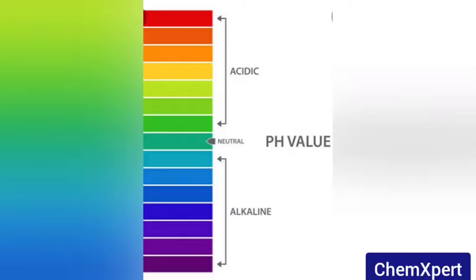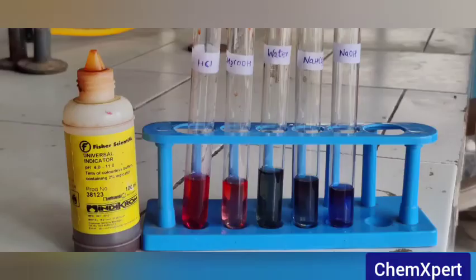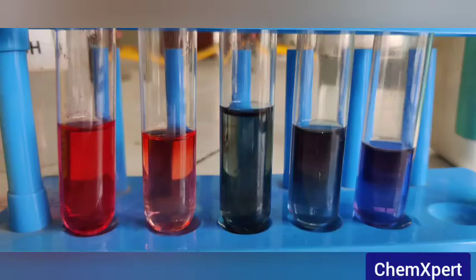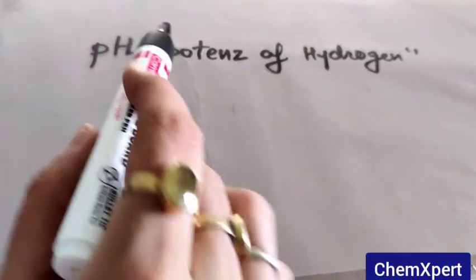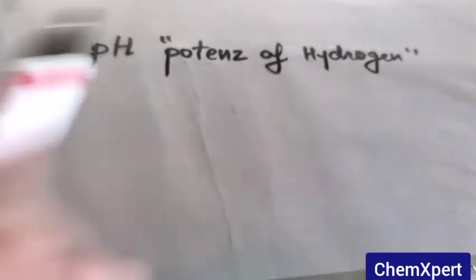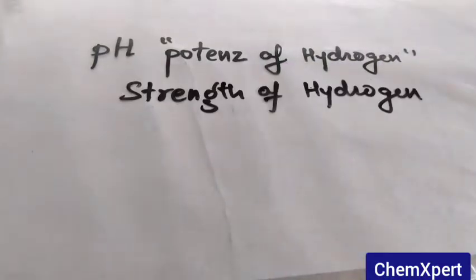Now a few questions related to the viva part from this practical. What is pH? So pH stands for potential of hydrogen, also known as the strength of hydrogen.